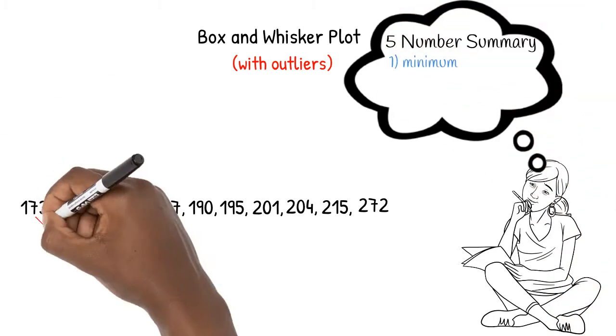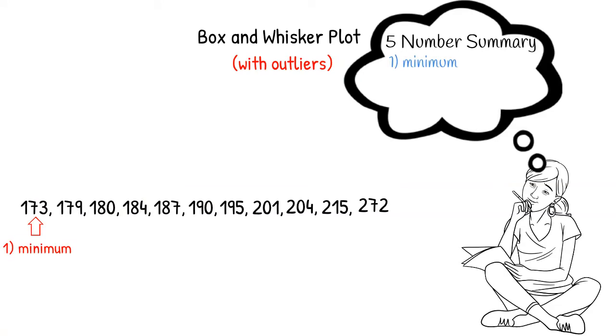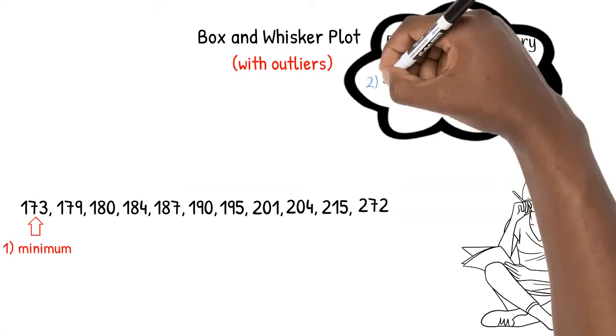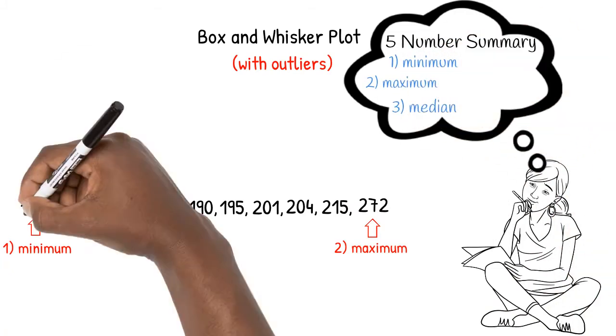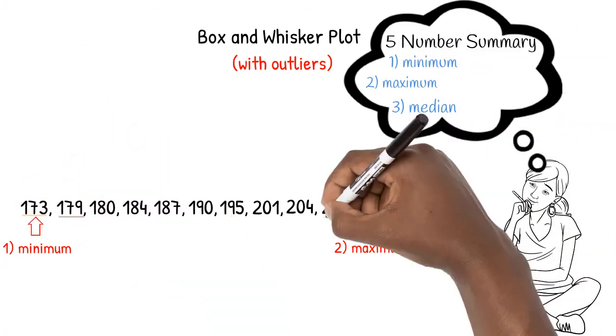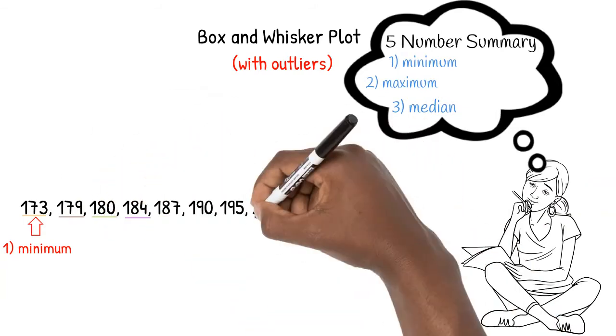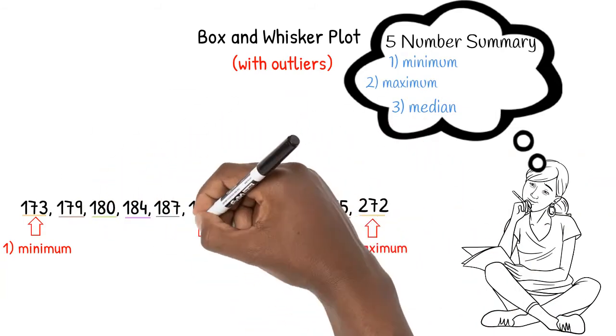First, we determine the minimum, the smallest number in the list. Then the maximum, the largest number. After making sure that our numbers were listed in order, we eliminated pairs of numbers starting with the first and last and moving inwards until we found the middle number, the median.